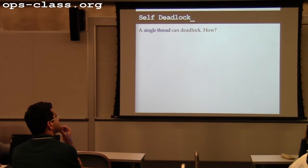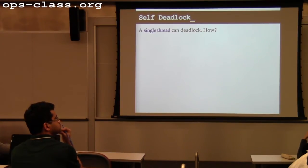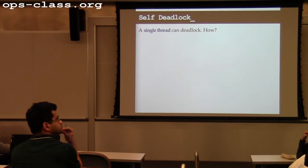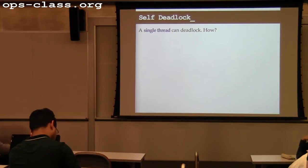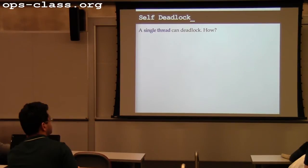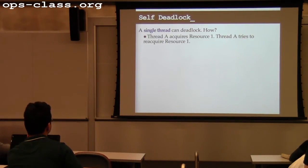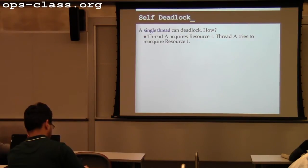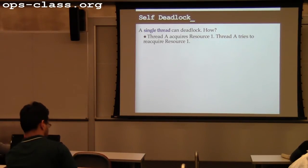How can a single thread deadlock? What happens if you call lock_acquire and then immediately call lock_acquire again? That will deadlock — this is called self-deadlock. Thread A acquires the resource, and then thread A tries to reacquire the resource. But why would this happen? It seems like a completely trivial programming bug. Why would you ever have code that said acquire lock A and then the next line said acquire lock A again?